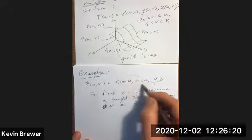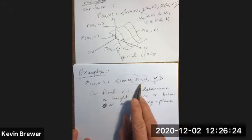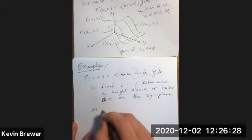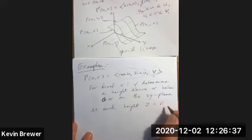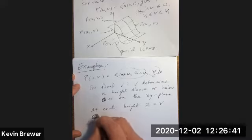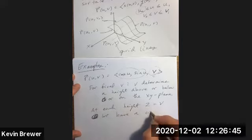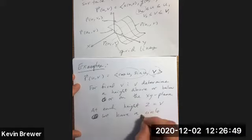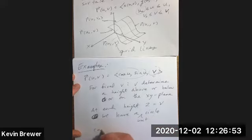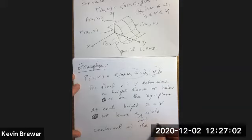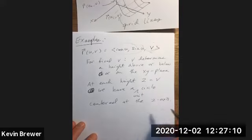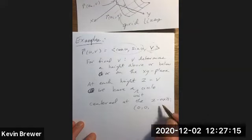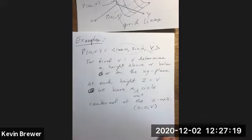V would still determine that even if it showed up over here. The main thing is that there's nothing that has to do with the heights, in other words the z value, other than the value of v. But then what happens for each particular value of v? You then get a unit circle at each height.